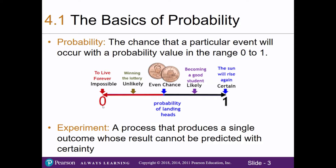0 means it's impossible, like living forever, and 1 is certain, such as the sun will rise again. In between we have unlikely probabilities like winning the lottery, an even probability like heads or tails which is a 50-50 chance, or becoming a good student is considered likely, especially if you follow the tips provided in this course.